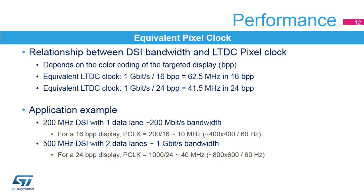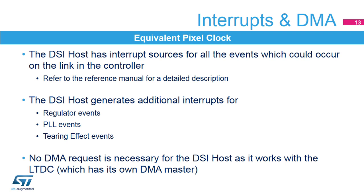In terms of performance, there is a relationship between the equivalent pixel clock and the DSI host configuration. Depending on the color coding, the number of data lanes used, and the speed of the data lanes, we can evaluate the equivalent pixel clock. As an example, when using two lanes at 500 Mbps for a total of 1 Gbps, we have a maximum equivalent pixel clock of 62.5 MHz for 16-bit per pixel coding and 41.5 MHz for 24-bit per pixel coding. Application examples include a small 400×400 pixel display running on a single 200 Mbps lane at 16 bits per pixel, or a large 800×600 pixel display at 24 bits per pixel running on both data lanes at 500 Mbps each.